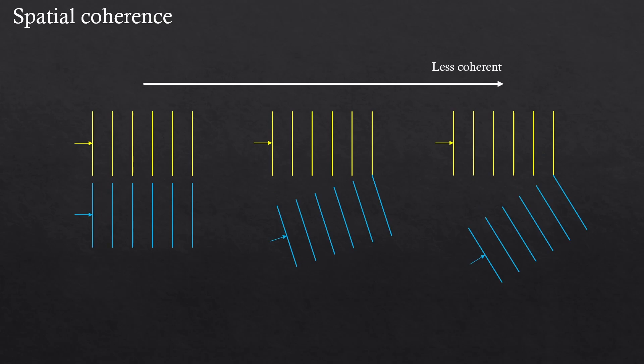So basically, the more waves propagate in the same direction, the more spatially coherent they are. They don't need to propagate at the same position, they just need to be in the same direction.